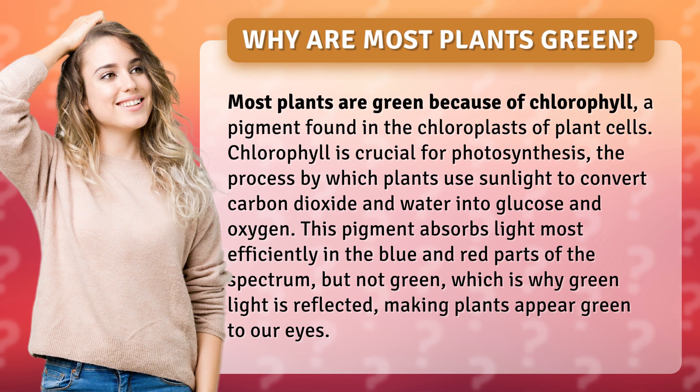This pigment absorbs light most efficiently in the blue and red parts of the spectrum, but not green, which is why green light is reflected, making plants appear green to our eyes.